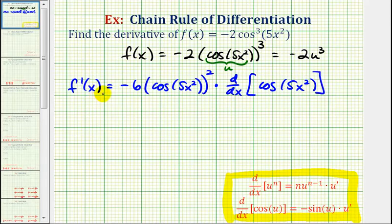What's a little more challenging about this example is that, notice that cosine five x squared is also a composite function, where now the inner function is five x squared,